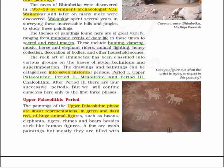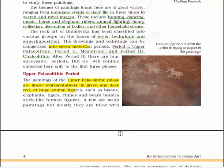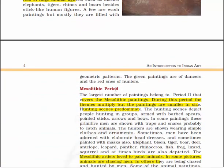Here you can see a painting — it appears to be an elephant with a person sitting on its back, riding it. The paintings of the Upper Paleolithic phase are linear representations in green and dark red of huge animal figures such as bison, elephants, tigers, rhinos and boars, besides stick-like human figures. Some are wash paintings but mostly filled with geometrical patterns. The green paintings are of dancers and the red ones of hunters.